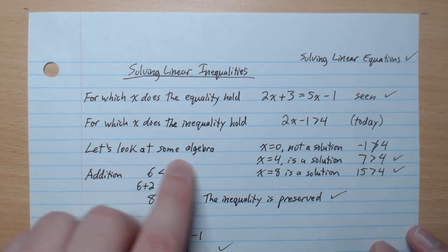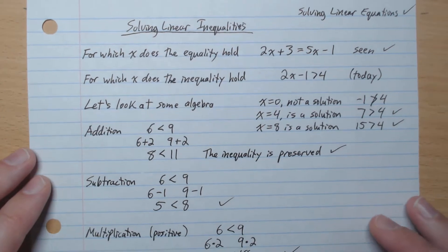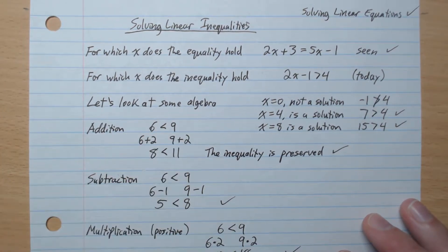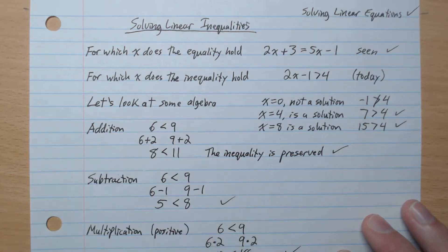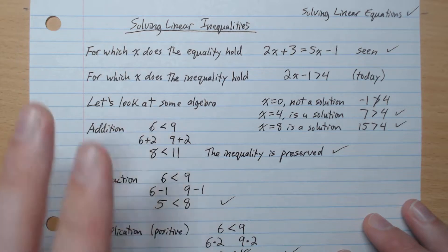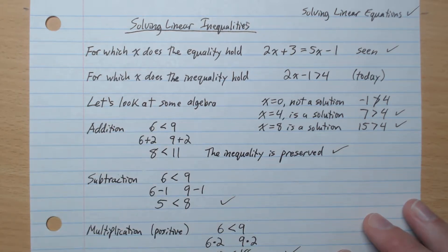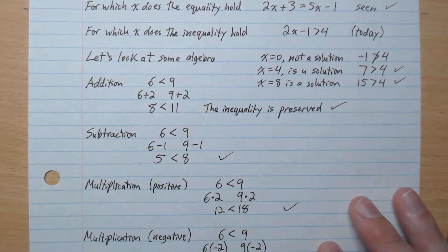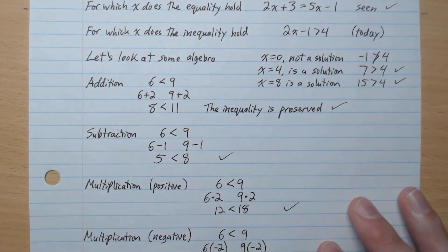So we're going to start looking at some algebra here. Let's see about addition: 6 is less than 9. We go plus 2 to both sides — 8 is less than 11. So the inequality is preserved when we add to both sides. I'm using examples to demonstrate that; it's not a proof, just an example. For subtraction, we go minus 1 to both sides, so we get 5 less than 8 — the inequality is preserved.